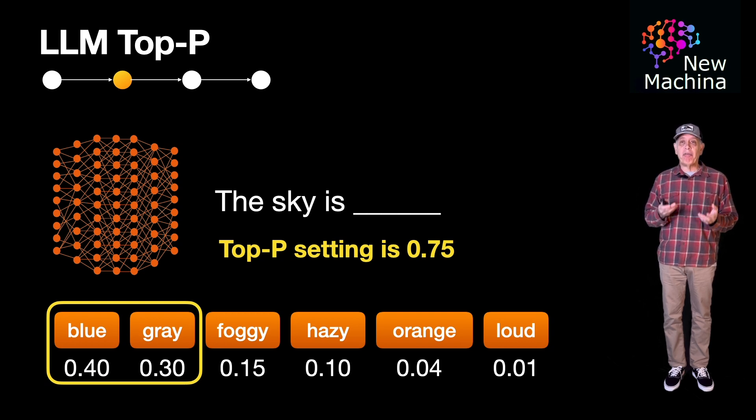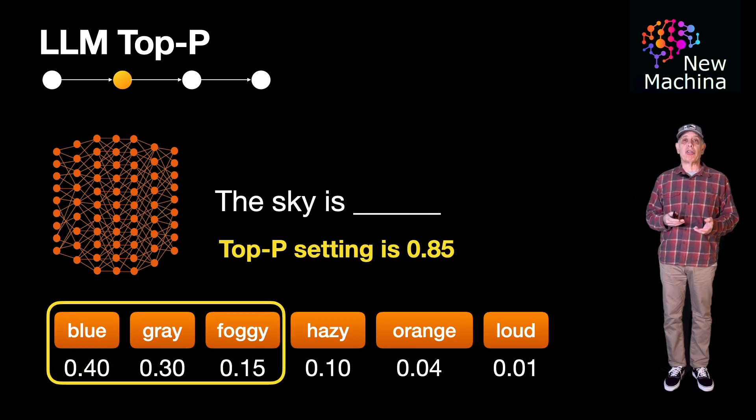In this first example shown, if the Top-P setting is 0.75, the LLM will only consider the first two words. In the second example shown, if the Top-P setting is 0.85, the LLM will consider only the first three words.